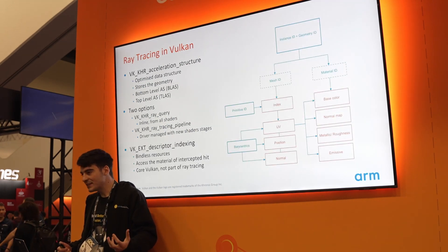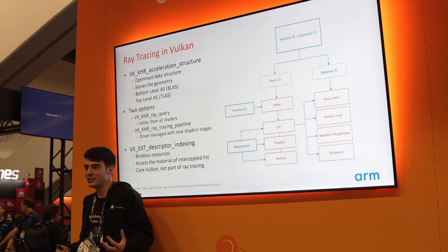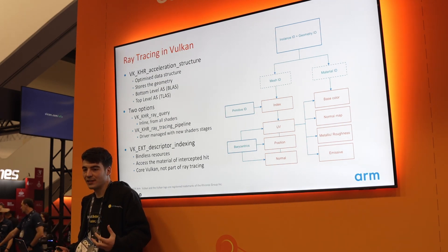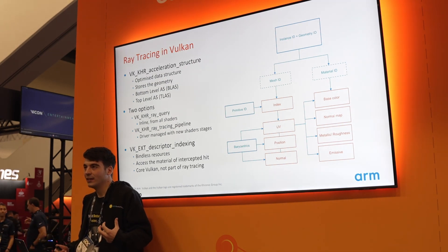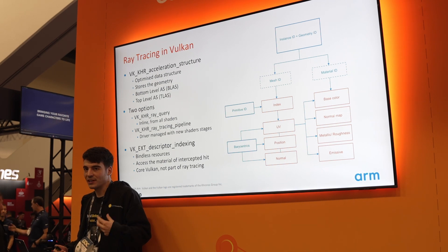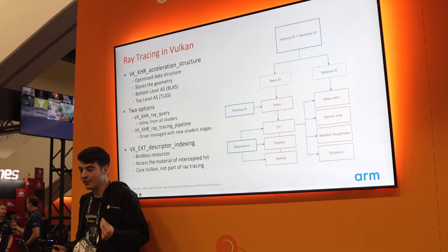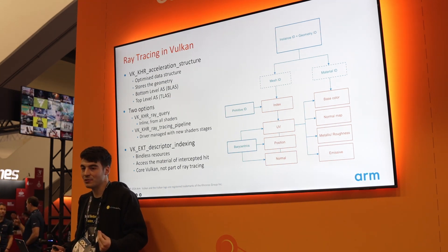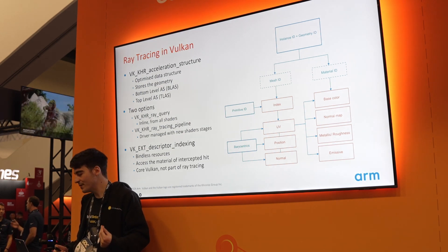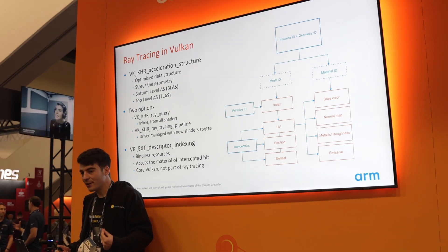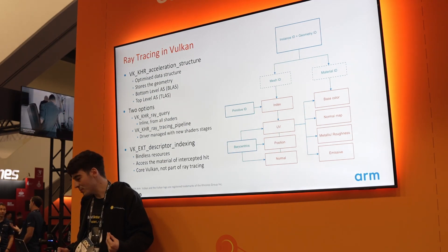Bindless resources, or bindless ray sources, are technically not necessary for ray tracing — you can implement all your ray tracing effects without them. However, they will simplify your ray tracing implementation significantly, since bindless resources are a very efficient and easy-to-implement way of addressing the material of the intersected object. Also, they are widely available — they are a core feature in Vulkan version 1.3.